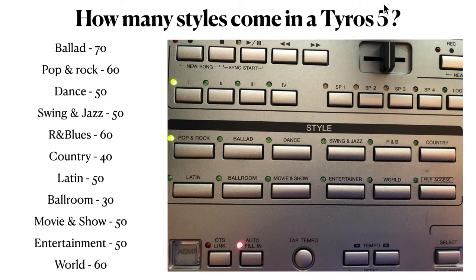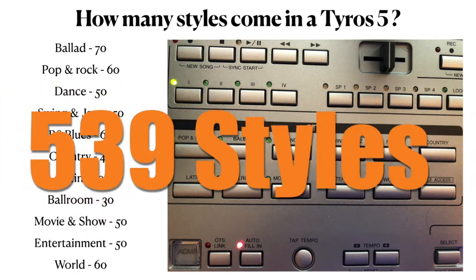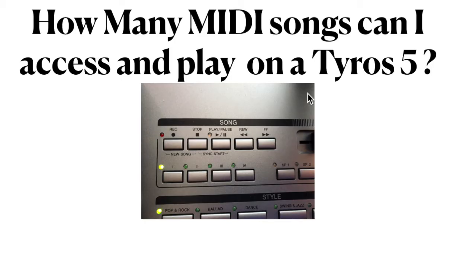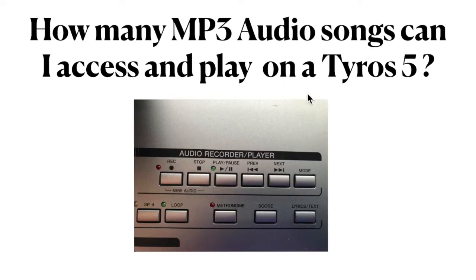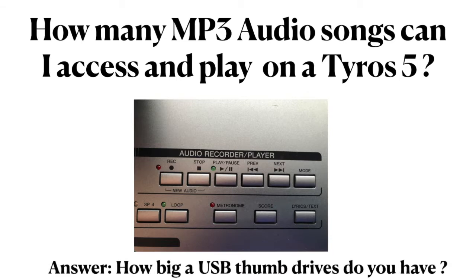How many styles came in my Tyros? Those styles are ballads and dance and rhythm and blues and Latin and ballroom and country. All together, there are 539 styles pre-installed in my Tyros 5. How many MIDI songs can I access and play at any one time on a Tyros? The answer is: how big is your thumb drive? Because I can store these MIDI songs on a thumb drive and have instant access to them. The same answer applies to MP3 audio songs — how big is your thumb drive?